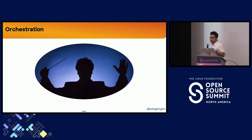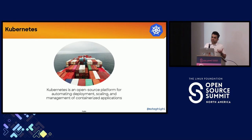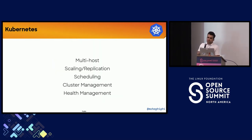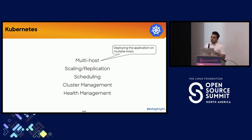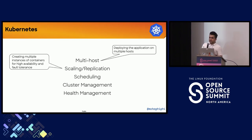Next is orchestration. We need to orchestrate all those microservices — if you've got 100 microservices, you can't manually orchestrate or scale them. We need an orchestrator: Kubernetes. Kubernetes is an open source platform for automating deployment, scaling, and management of containerized applications. A multi-container application must run on a multi-host environment to eliminate single points of failure. If one host goes down, the orchestration tool can switch load to another host. We also need to create new instances of individual microservice containers to scale accordingly, automatically.